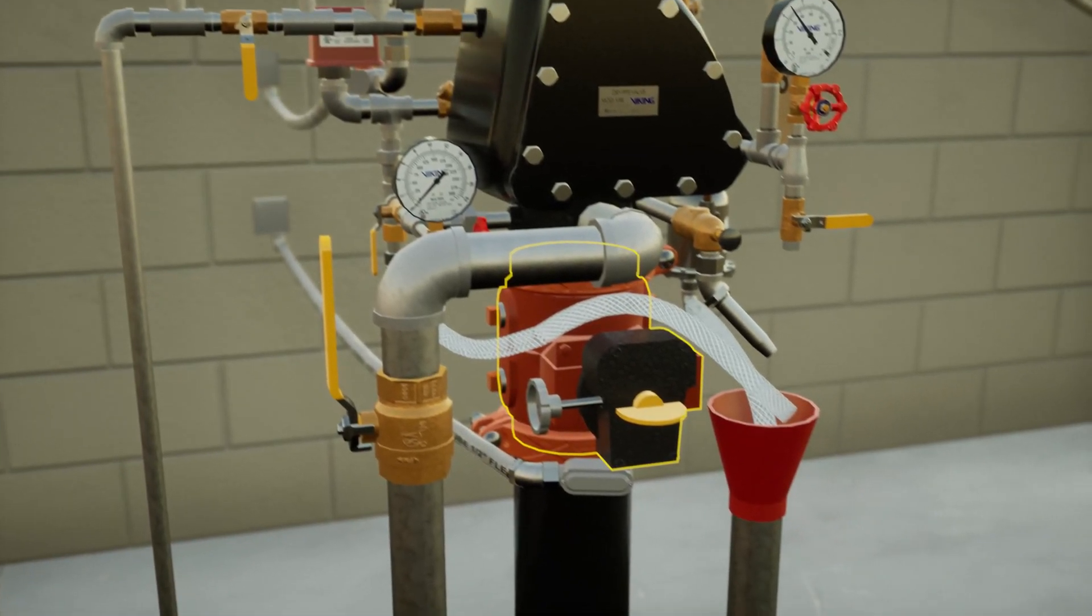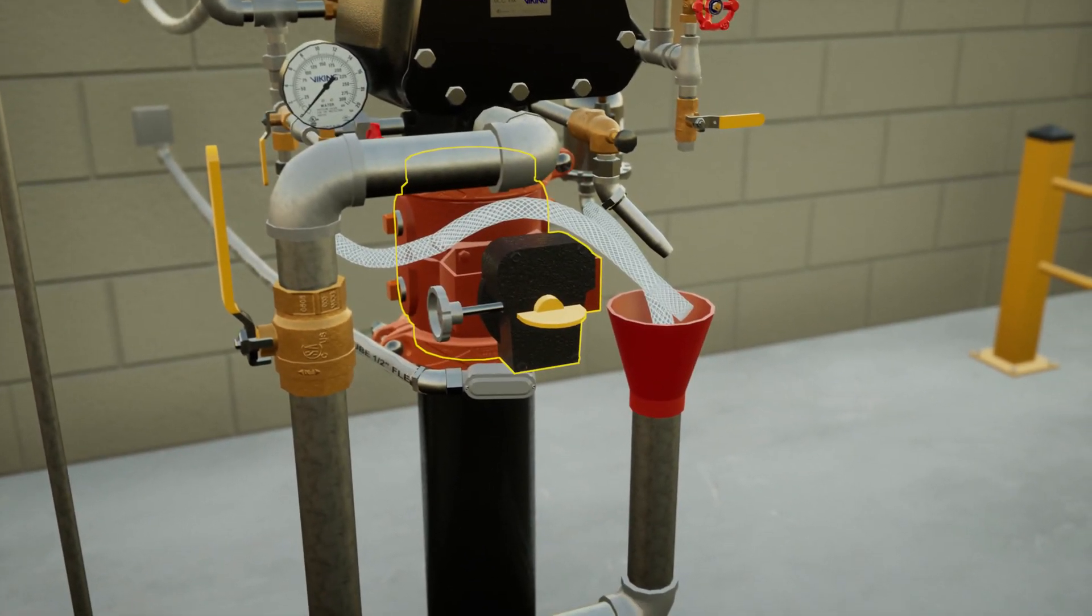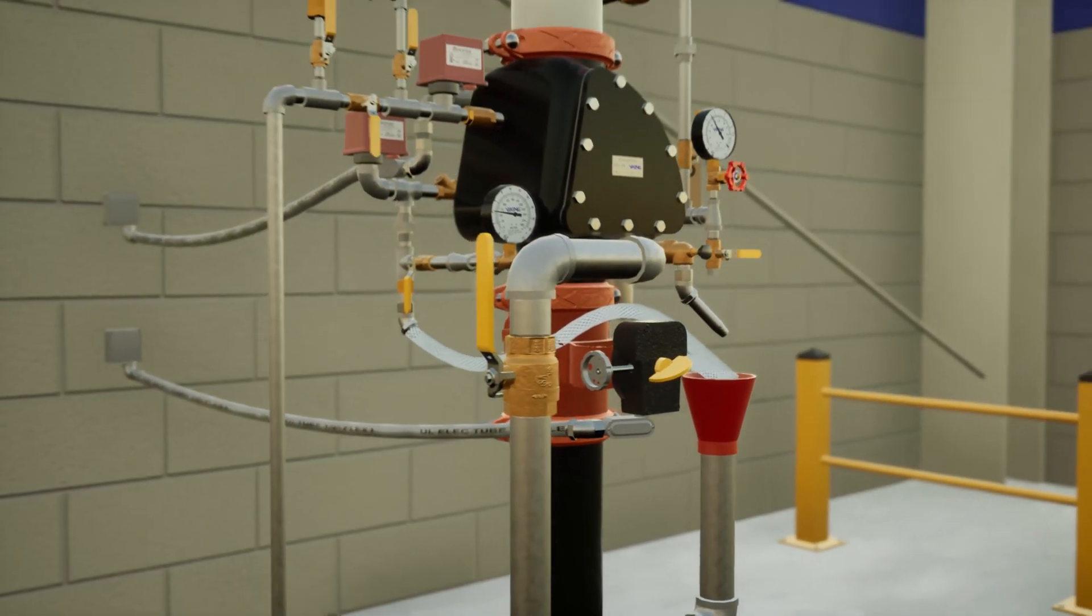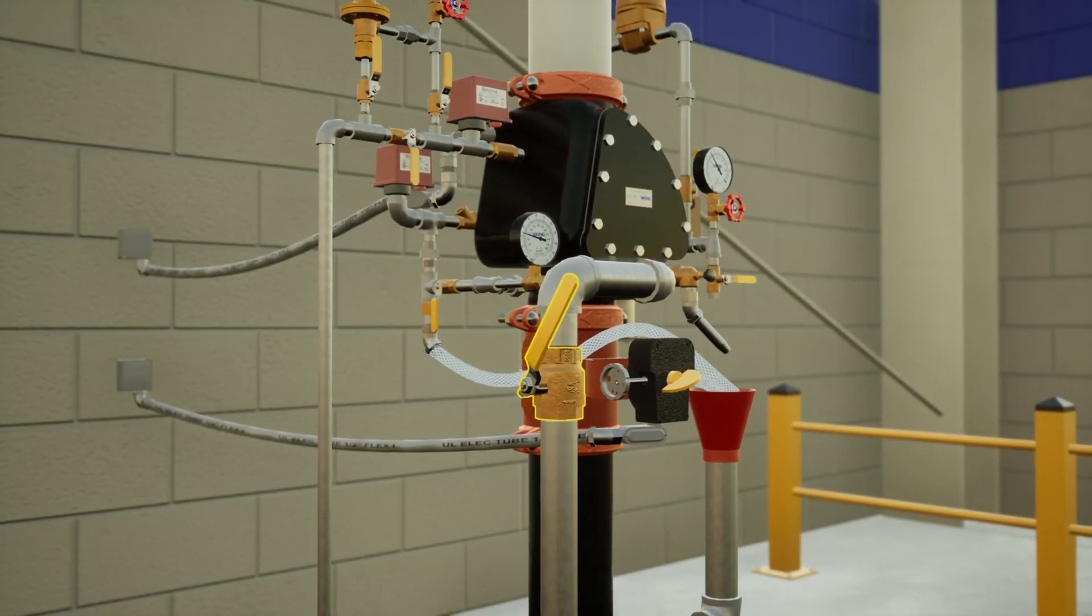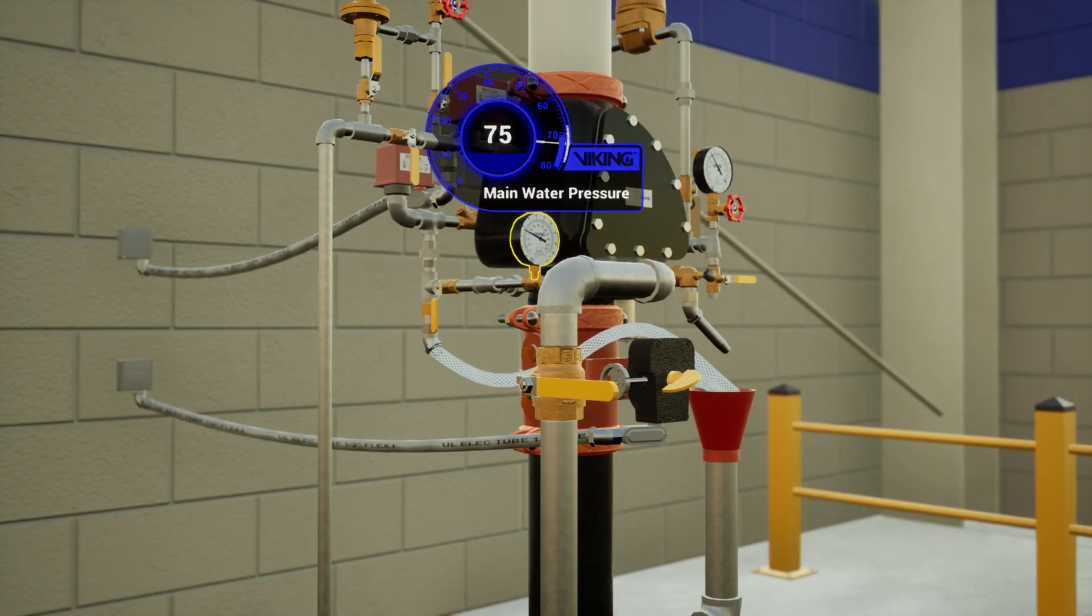Partially open the water supply valve and allow water to enter the inlet of the valve. Now close the main drain. Water supply pressure will show on the water supply pressure gauge.